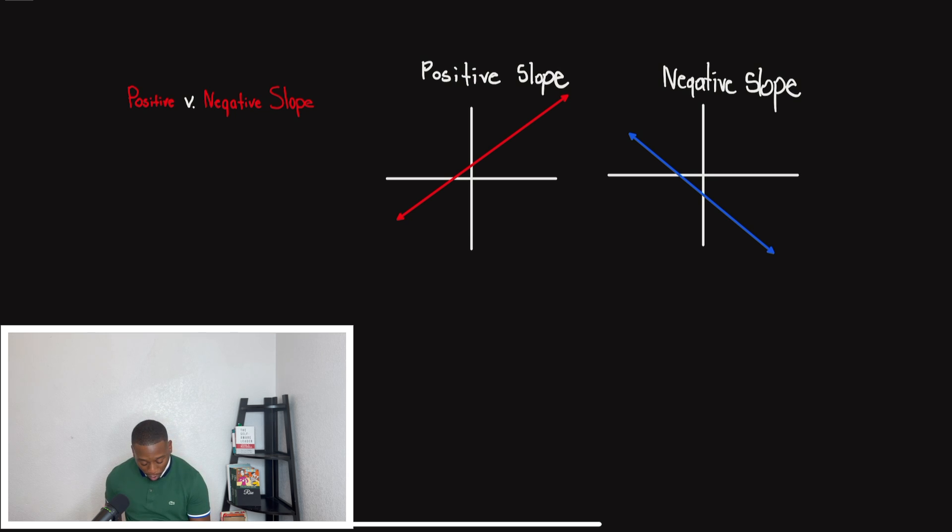So when we're talking about positive slopes, just remember, we read a graph like how we read a book. We're going to move from left to right. And when we're following that line, if it looks like we're climbing up the stairs or going up a hill, then we should know that we are going to have a positive slope like the red line below.